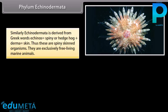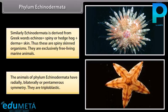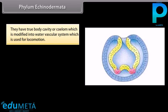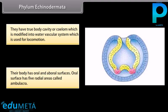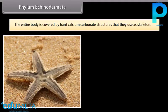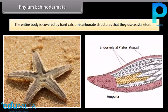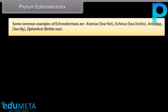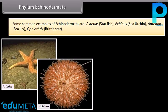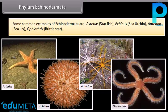Phylum Echinodermata is derived from Greek words echinos, meaning spiny or hedgehog, plus derma, meaning skin — spiny-skinned organisms. They are exclusively free-living marine animals. The animals of Phylum Echinodermata have radially, bilaterally, or pentamerous symmetry. They are triploblastic and have a true body cavity or coelom, which is modified into a water vascular system used for locomotion. Their body has oral and aboral surfaces; the oral surface has five radial areas called ambulacra. The body is covered by calcium carbonate structures used as skeleton. Common examples are Asterias (starfish), Echinus (sea urchin), Antedon (sea lily), and Ophiotrix (brittle star).